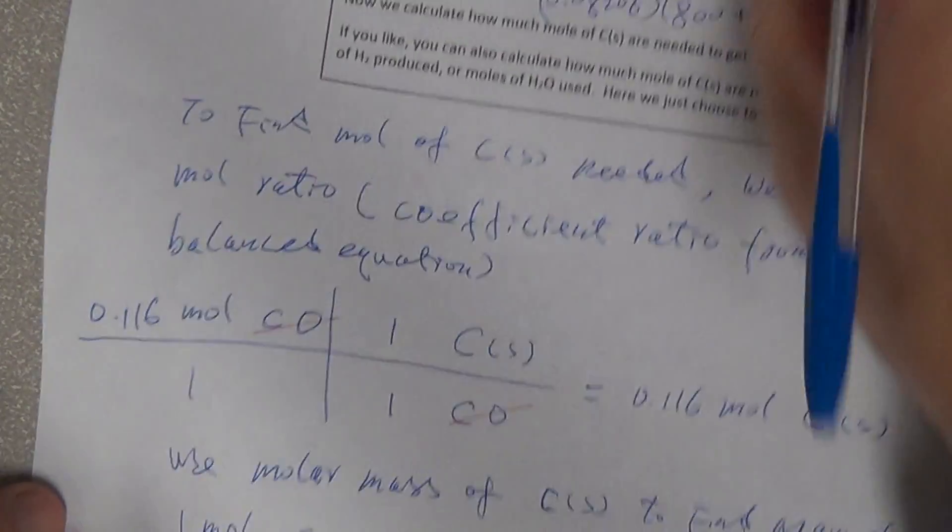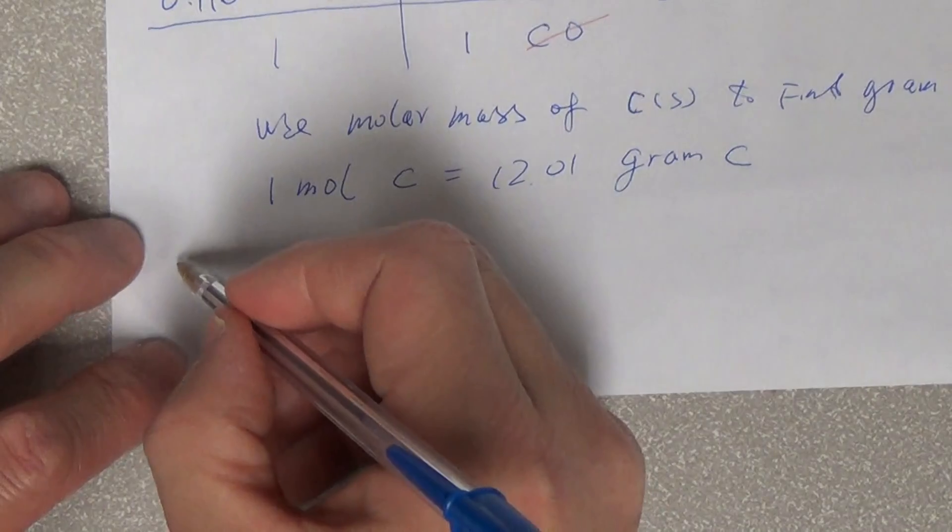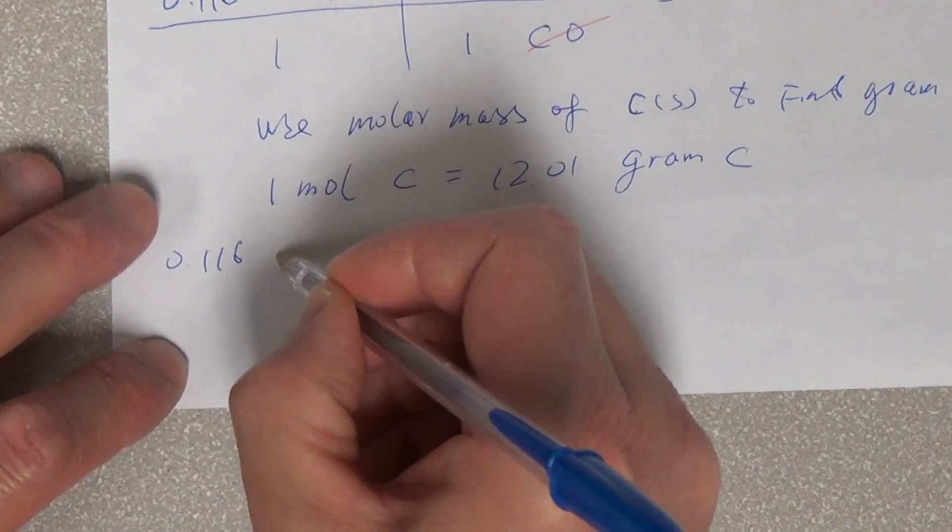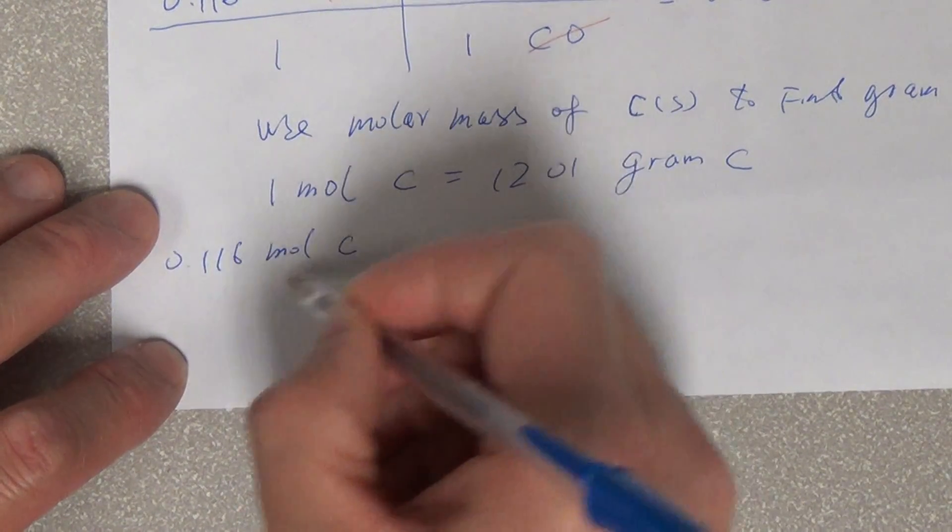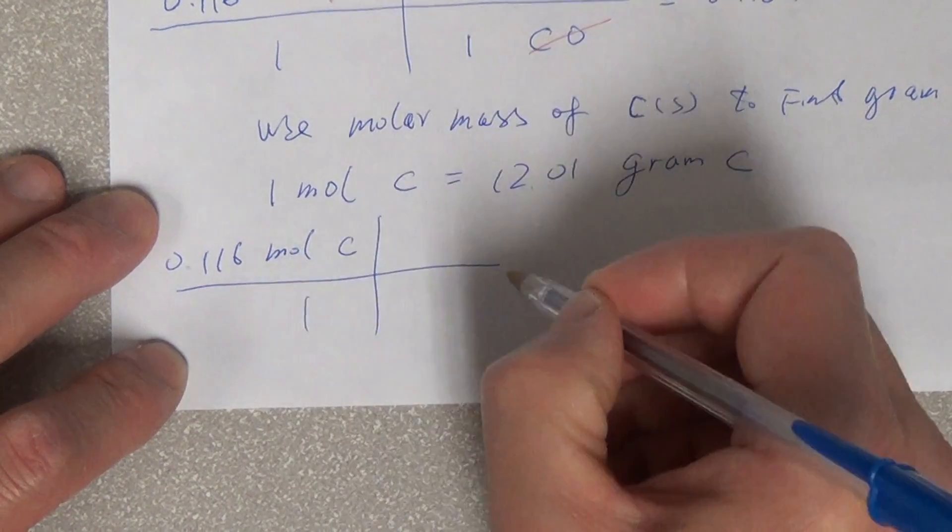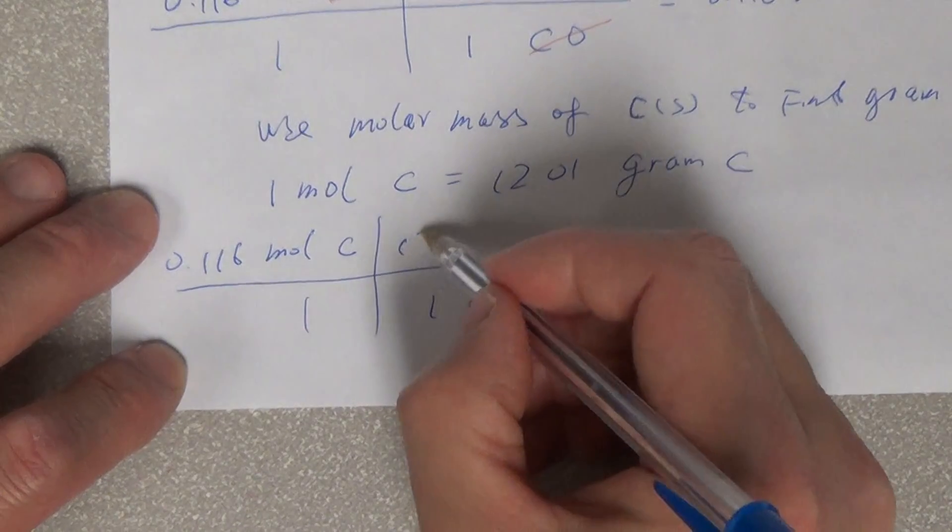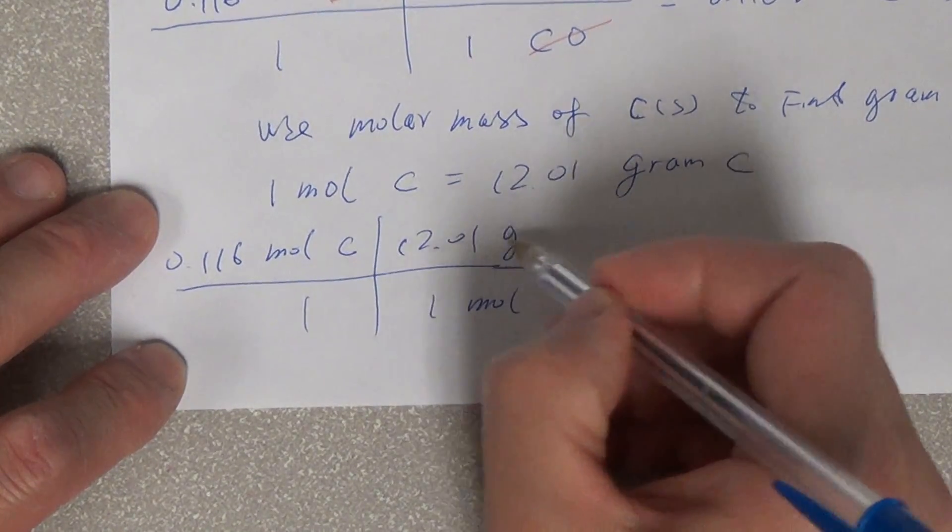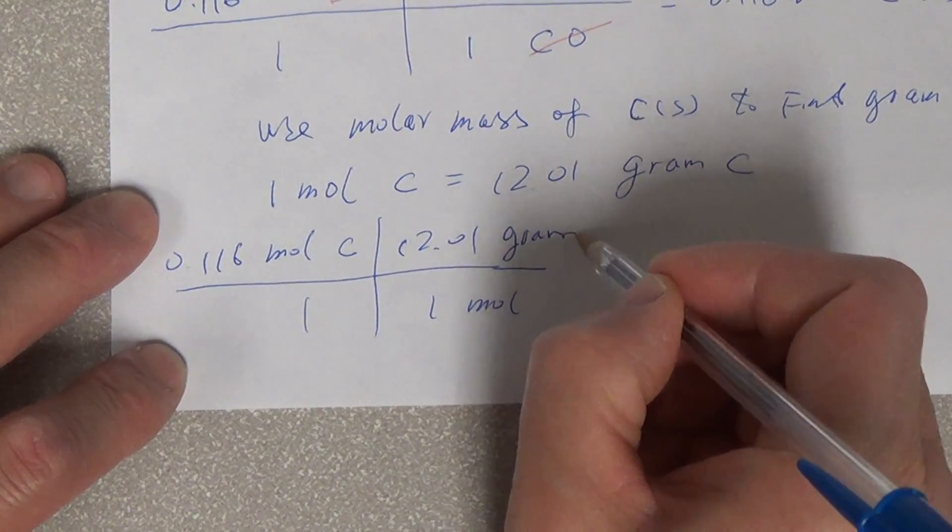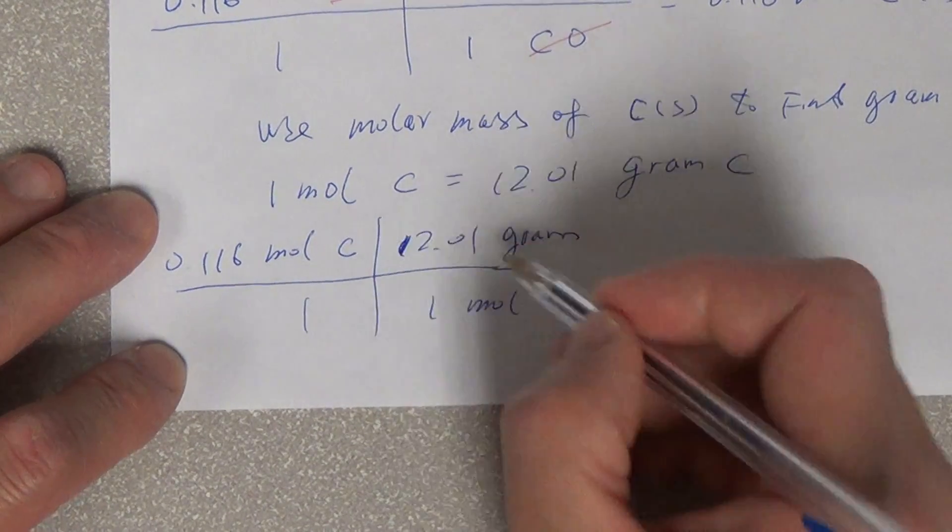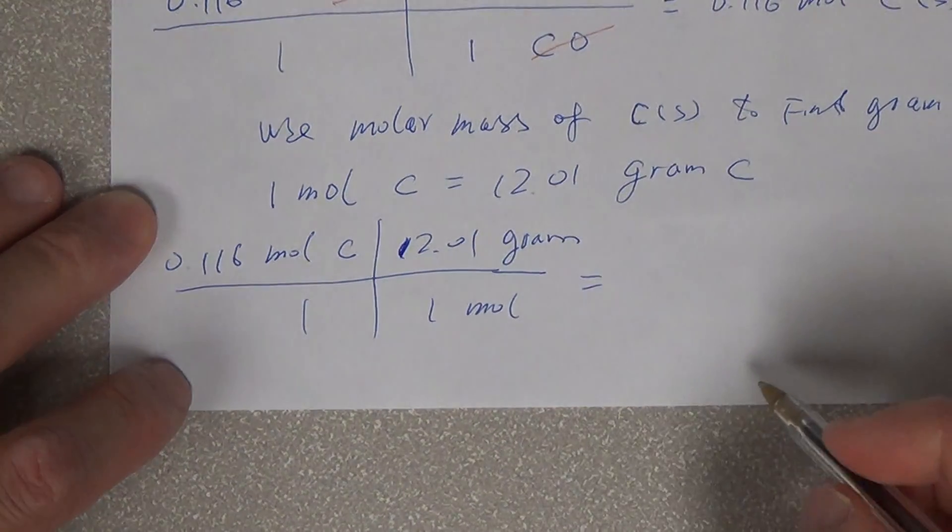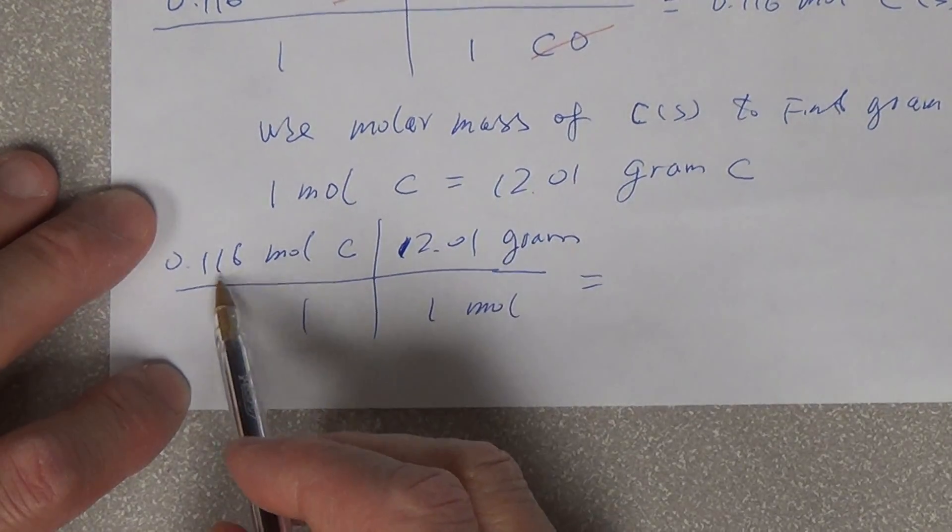Starting from 0.116 moles C, then we know one mole C from this equation is 12.01 grams.